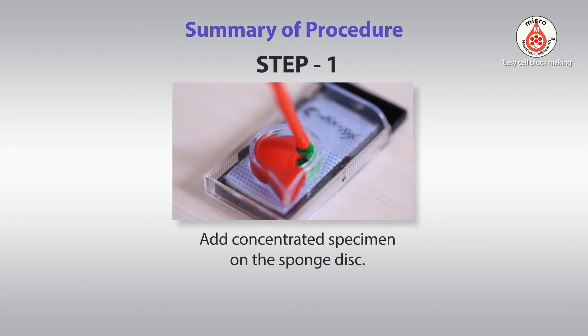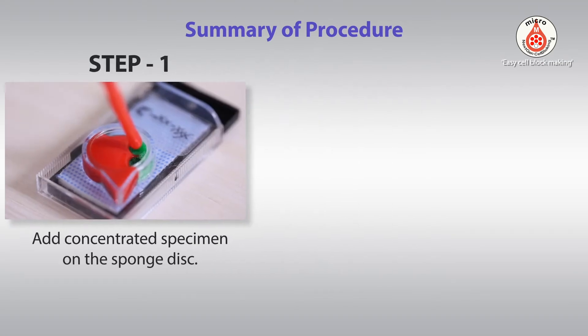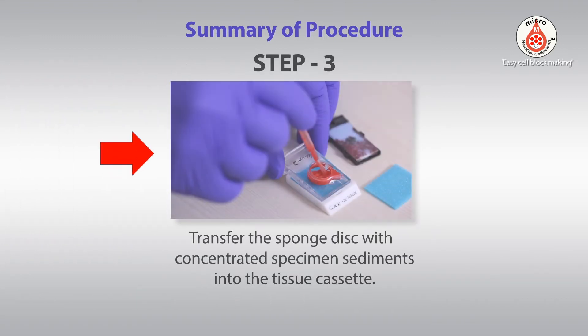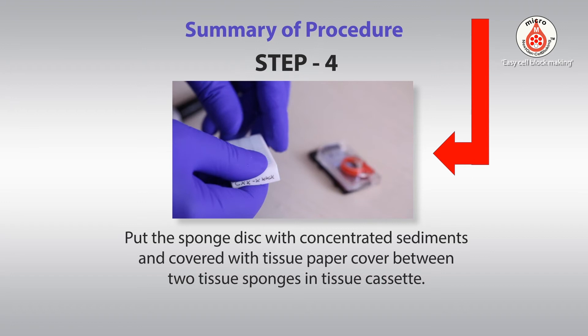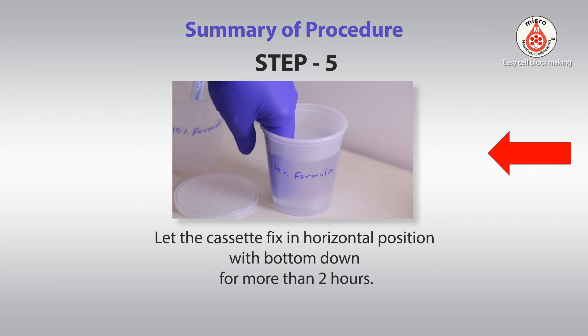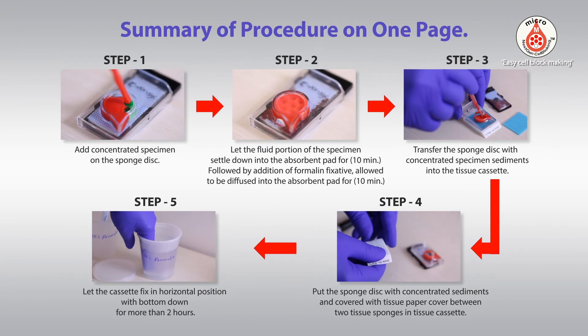Summary procedure. Step 1: add concentrated specimen on the sponge disc. Step 2: let the fluid portion of the specimen settle into the absorbent pad for 10 minutes, followed by addition of formalin fixative, allowed to diffuse into the absorbent pad for 10 minutes. Step 3: transfer the sponge disc with concentrated specimen sediments into the tissue cassette. Step 4: place the sponge disc with concentrated sediments, covered with tissue paper, between two tissue sponges in the tissue cassette. Step 5: let the cassette fix in horizontal position with bottom-down for more than 2 hours.